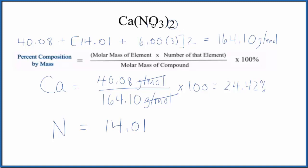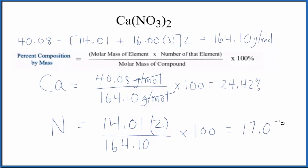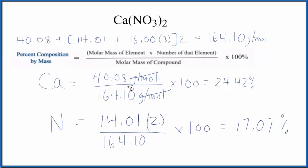I have two nitrogen atoms, so the number of the element is two. I divide that by the molar mass for the compound, multiply by 100, and we get 17.07%.